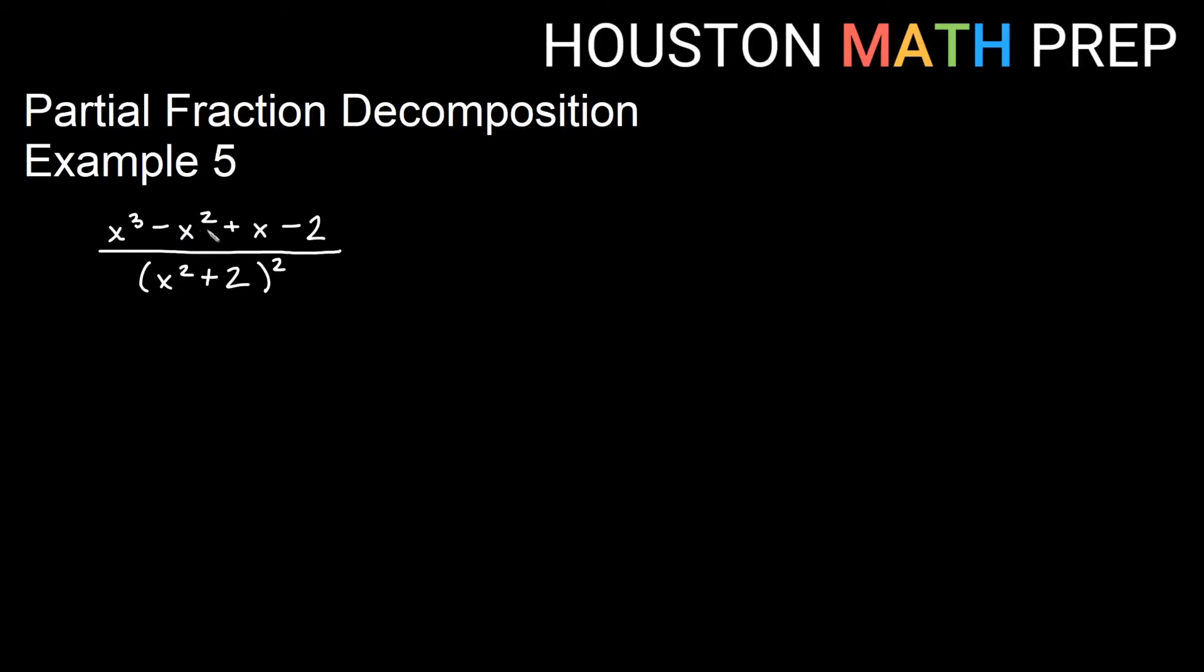So I have x cubed minus x squared plus x minus two on the top, and I have that over x squared plus two quantity squared. So I have not only a quadratic factor, but it is also a repeated factor as noted by the square out here.